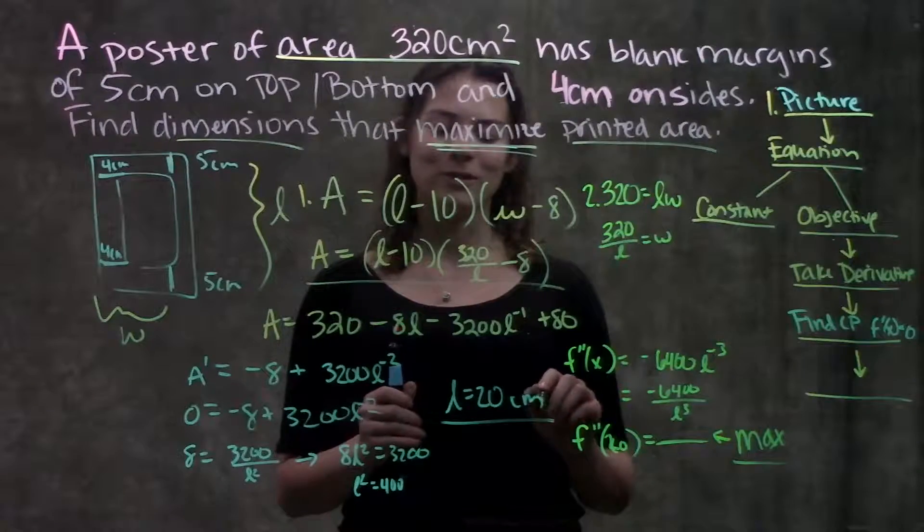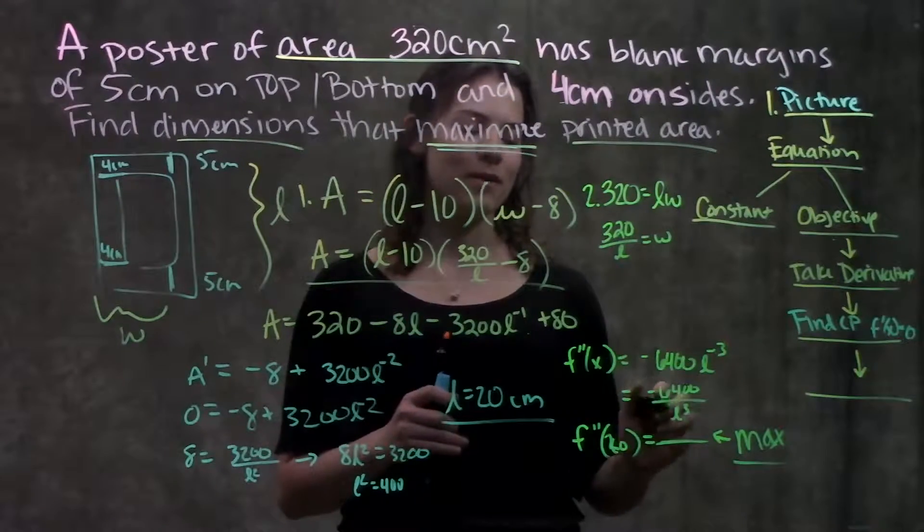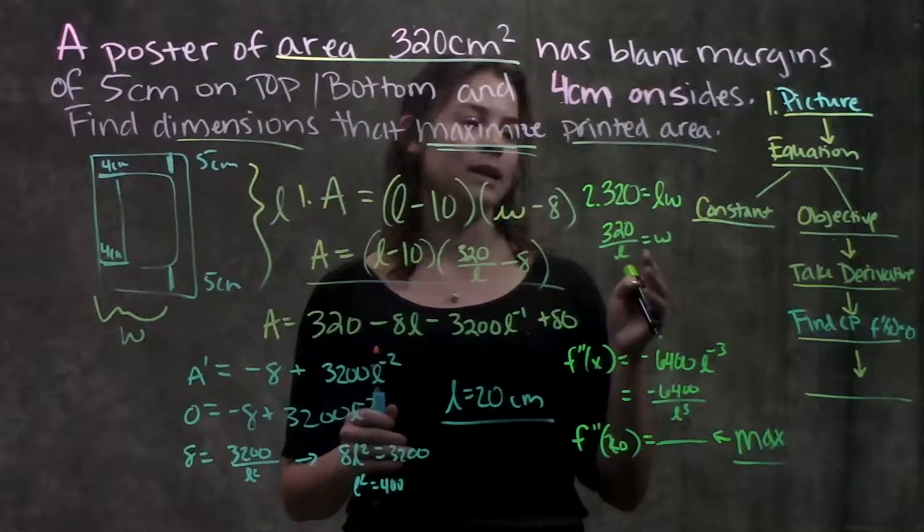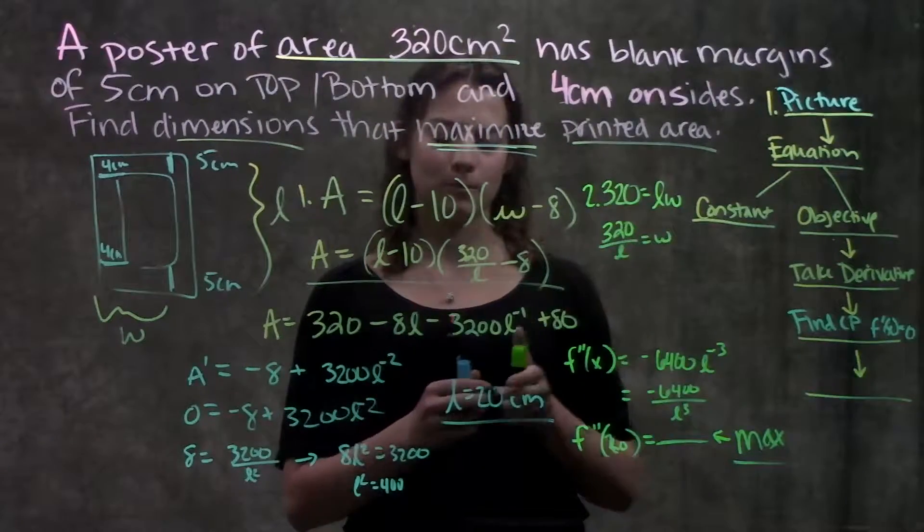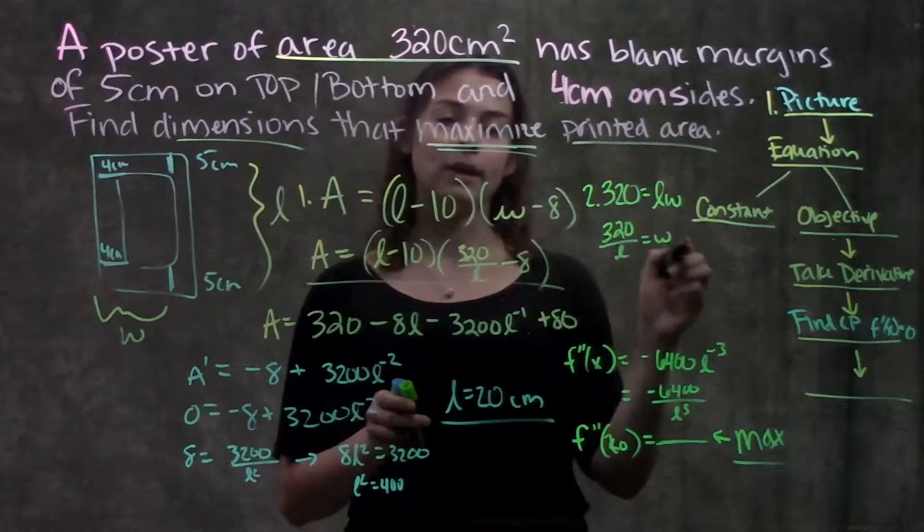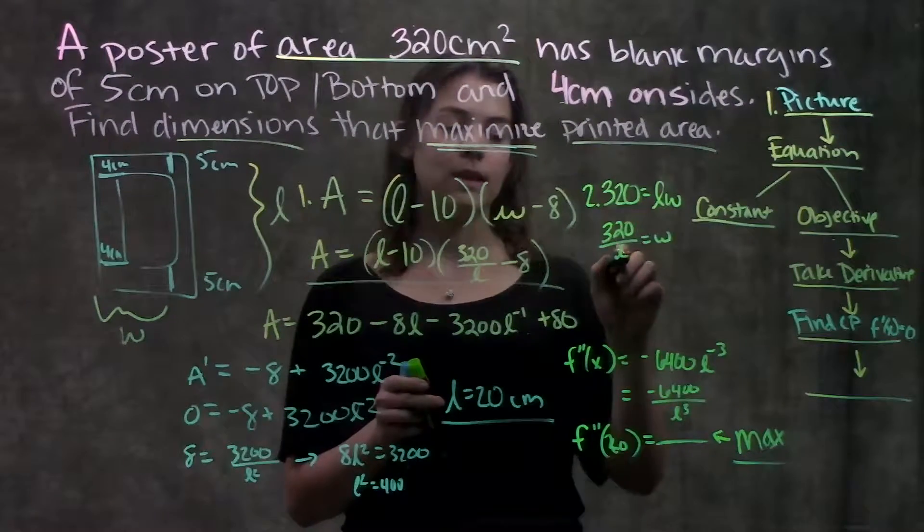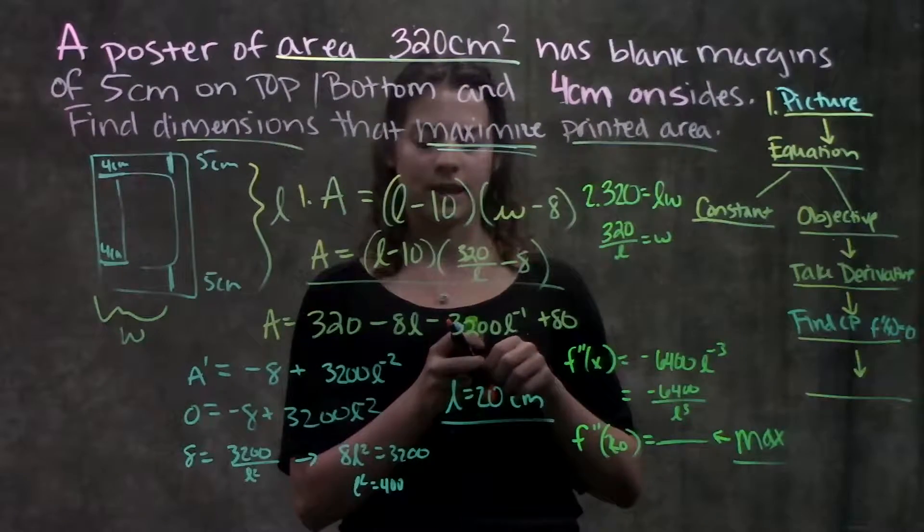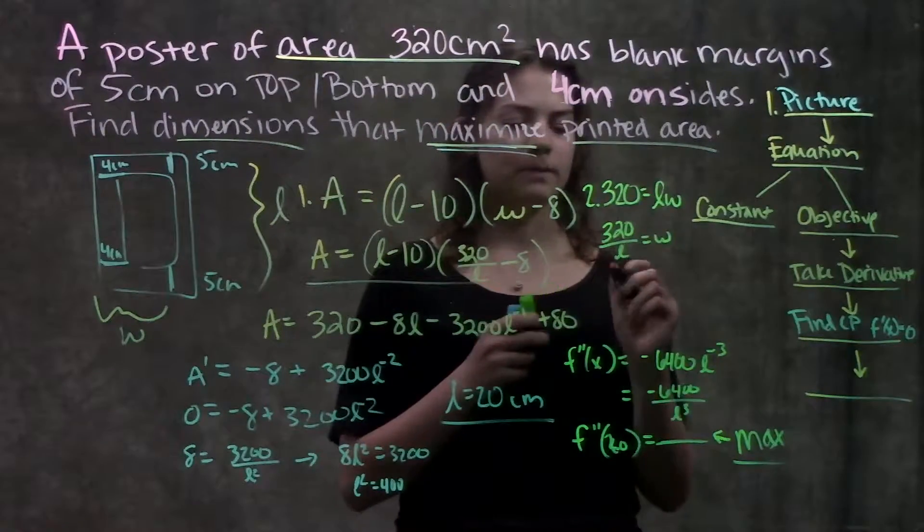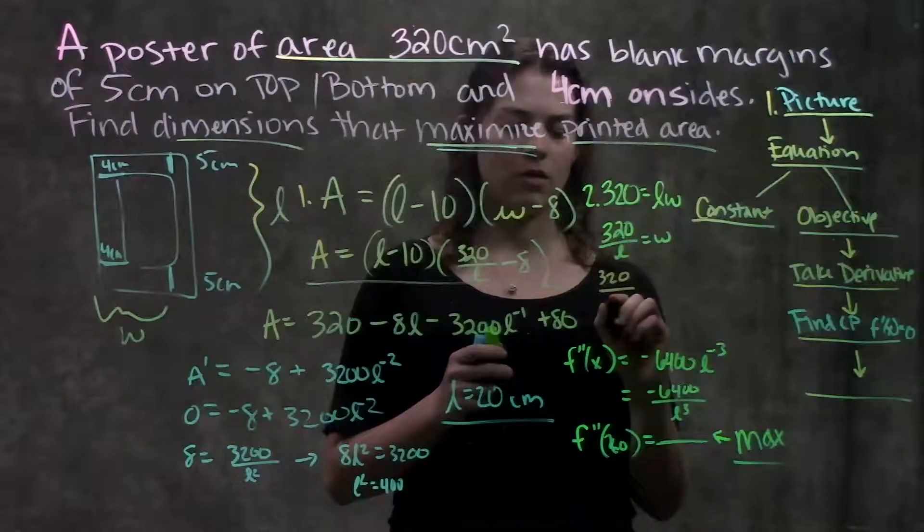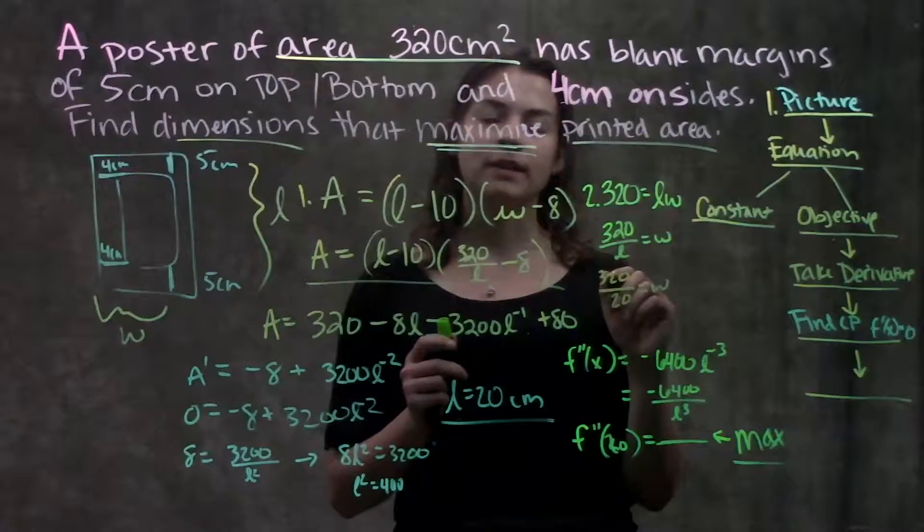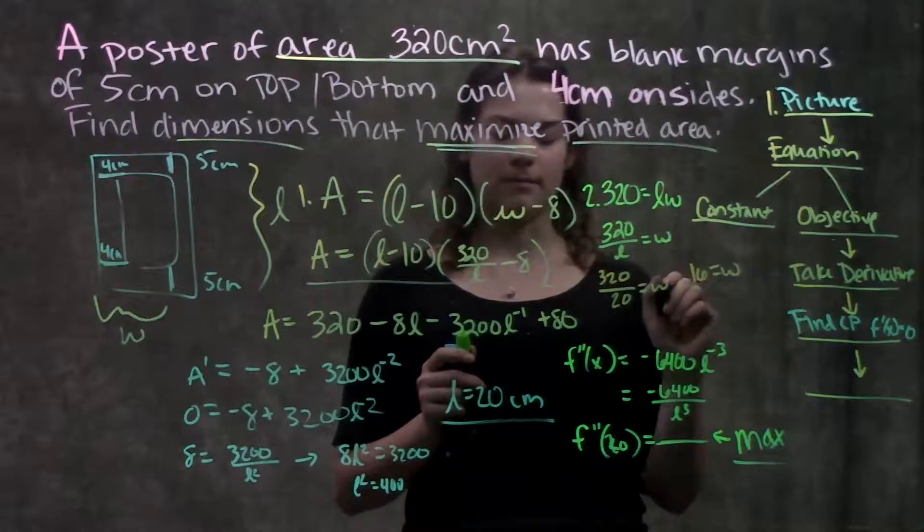So we solved for L equals 20 as our critical point. We verified that it was the maximum, and it was. So now we're going to go ahead and solve for our other variable, W. In order to do that, I'm going to go back here to my set relationship, plug in the L that I have, and just simplify in order to get W. So now this becomes 320 over 20 is equal to W, and then this simplifies down to 16 equals W.